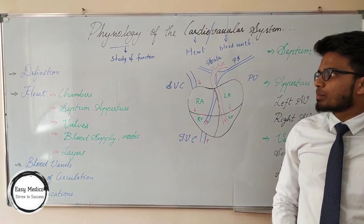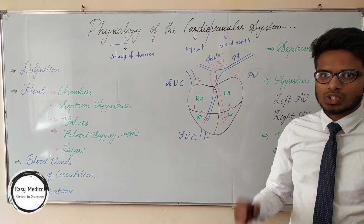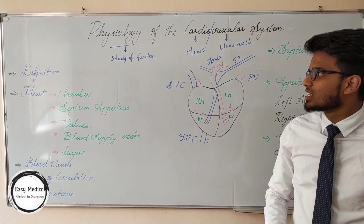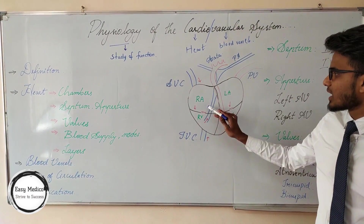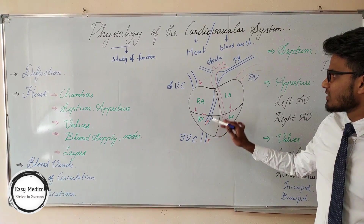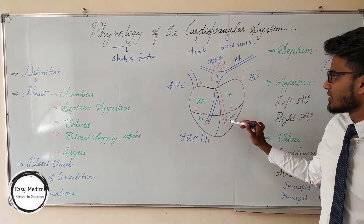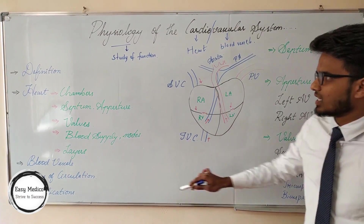The heart is the shape of a once-closed fist. Chambers of the Heart: there are four chambers — Right Atrium, Right Ventricle, Left Atrium, and Left Ventricle.